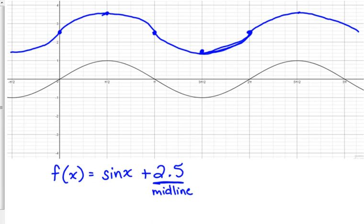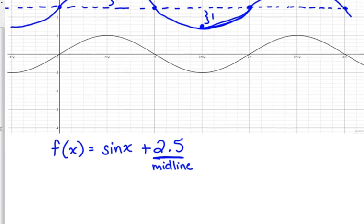I'm going to take the entire graph up 2.5 units. So I could draw a horizontal line right through here. This is not part of the graph, but this is just a visual for you. That horizontal line there is the midline. My amplitude is still 1. There's still 1 unit between my midline and my maximum and my midline and my minimum. So I didn't change the amplitude. I didn't change the period.